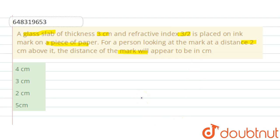Now students, the actual depth or the distance that will appear of the mark is actual depth, which is equal to the thickness of the glass slab, that is 3 cm.